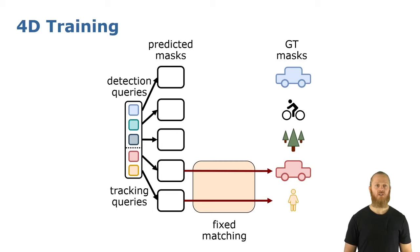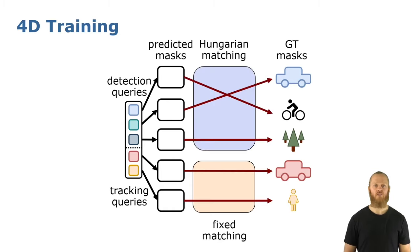To do this, we first match the tracking queries with the instances they detected before and optimize for the mask and for the class. Then we remove these predictions and this ground truth and for the rest, we use the Hungarian algorithm that will, in this case, match the remaining ground truth with the remaining predictions, to basically be able to segment the new appearing instances and the stuff masks. And again here, for each pair, we optimize for mask and for class.